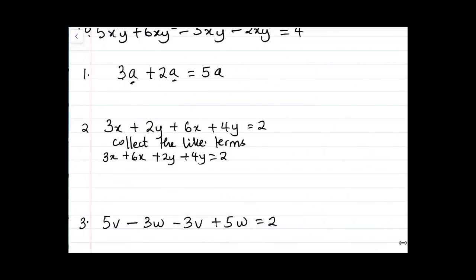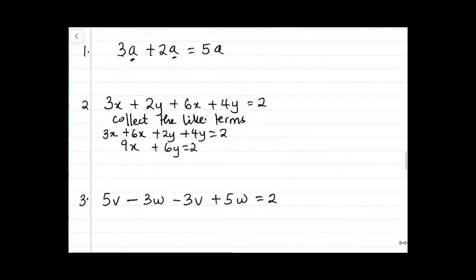So we add the two together. 3x plus 6x will give us 9x, and then 2y plus 4y will give us 6y equals 2. And that is how we apply our knowledge of coefficient and variable and also like and unlike terms. So you can see the like terms, we group them and we're able to add them very easily.